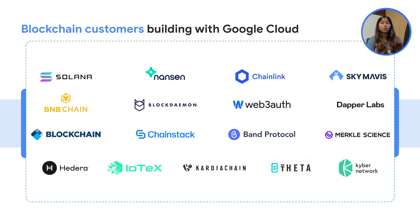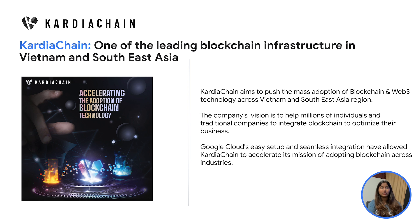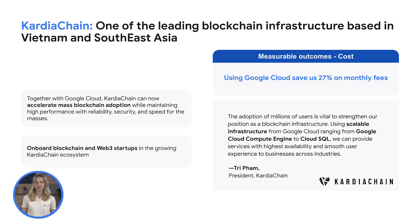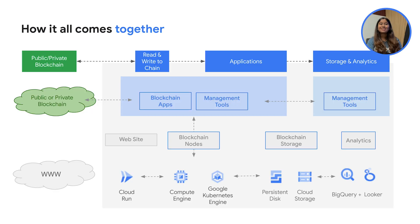Google Cloud has collaborated with various businesses to build powerful and robust blockchain applications and solutions. Cardia Chain, one of the leading blockchain infrastructure providers in Vietnam and Southeast Asia, aims to help millions of individuals and traditional companies integrate blockchain to optimize their business. Google Cloud's easy setup and seamless integrations have allowed Cardia Chain to accelerate this mission of evangelizing blockchain across industries. With the help of Google Cloud's scalable infrastructure leveraging Compute Engine and Cloud SQL, Cardia Chain provides services with the highest availability and smooth user experience. The company has also seen a 27% reduction in their monthly infrastructure cost on adopting Google Cloud.